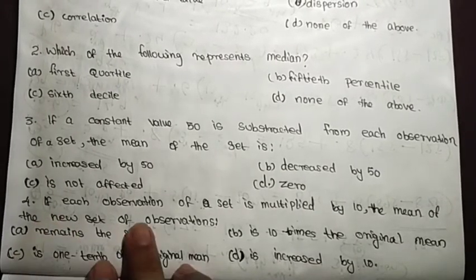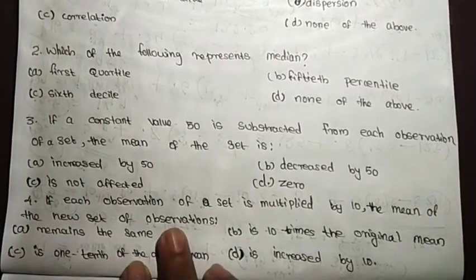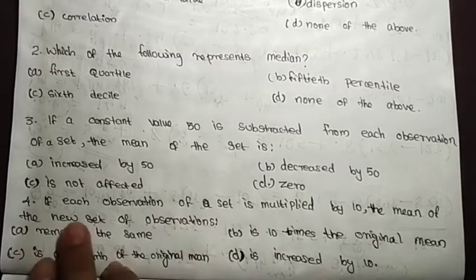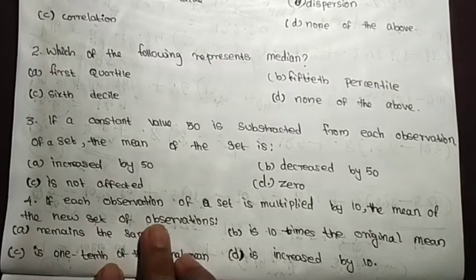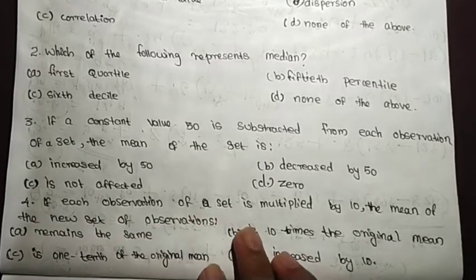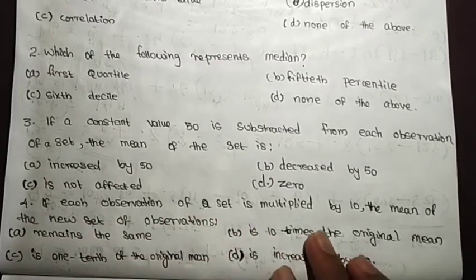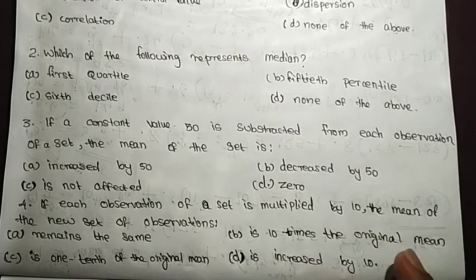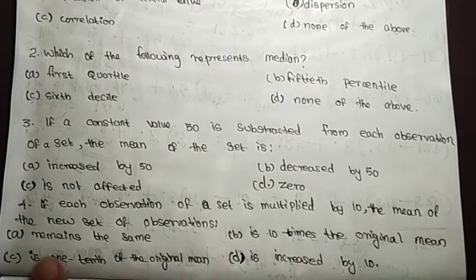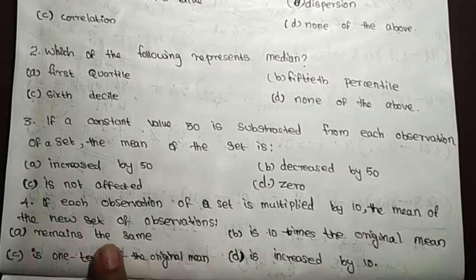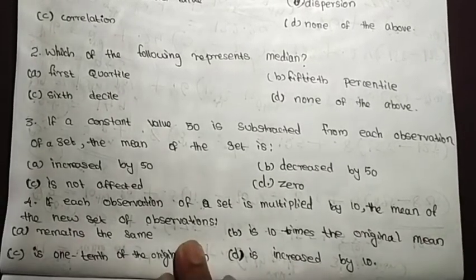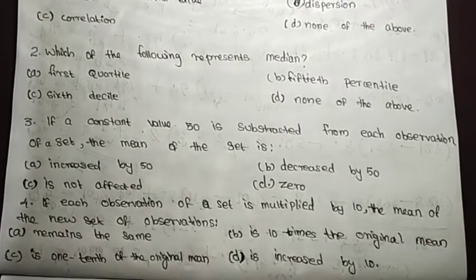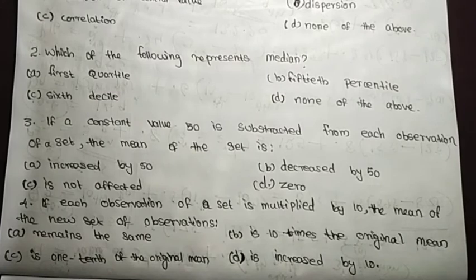Question 4: If each observation of a set is multiplied by 10, what happens to the mean of the new set of observations?